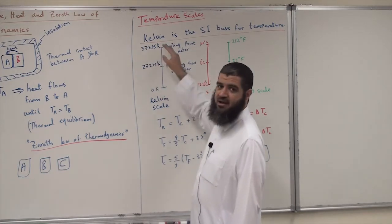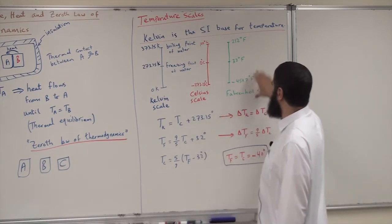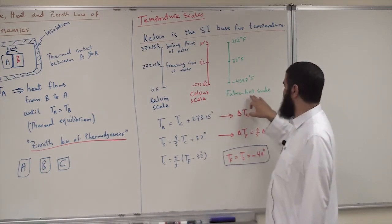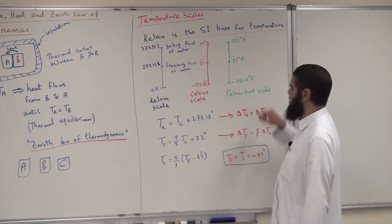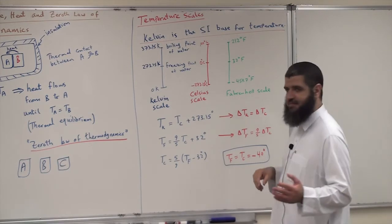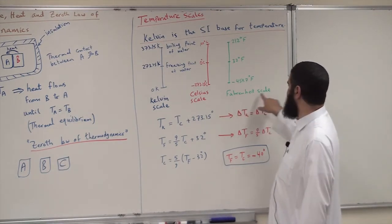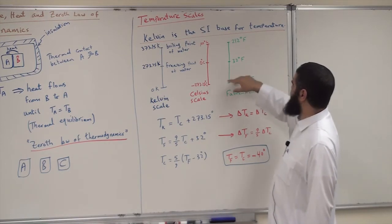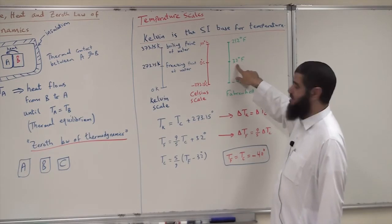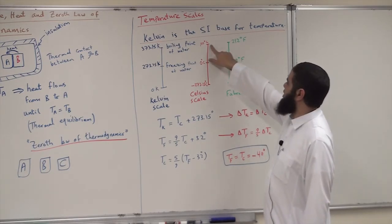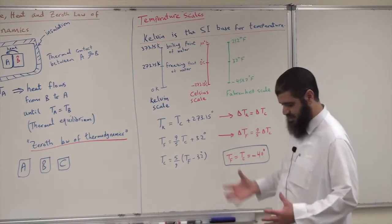The last scale is the Fahrenheit scale, commonly used in the United States and seen on some AC machines or cars. On this scale, the freezing point of water is 32°F and the boiling point of water is 212°F.